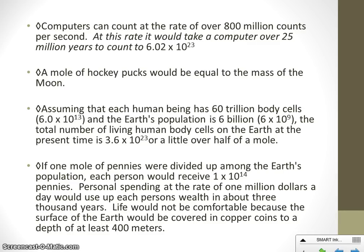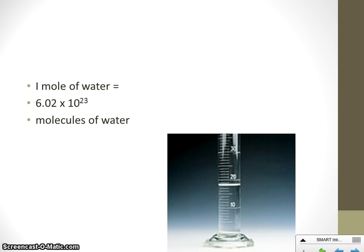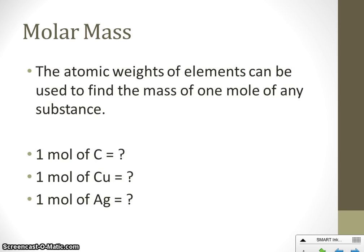The reason the mole is such a big number is because atoms are so small, so when we count them there are a lot of them. If we have 1 mole of water, that means we have 6.02 times 10 to the 23rd molecules of water — just like 1 mole of eggs is 6.02 times 10 to the 23rd eggs. So 6.02 times 10 to the 23rd is 1 mole of anything. We usually talk about molecules and atoms when discussing moles.